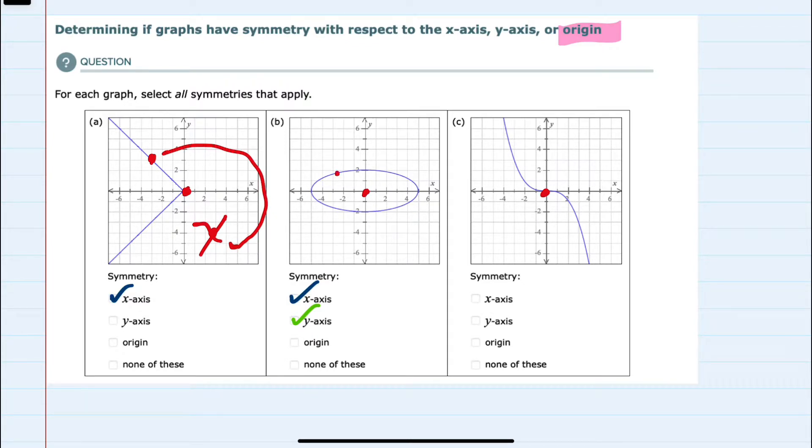The second one though, every point does have a mirror image across the origin, or this way. So it does have origin symmetry. And the last example here also has origin symmetry, because every point does have a mirror image across the origin, here and here, so it has just origin symmetry.